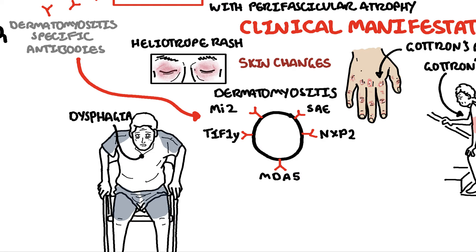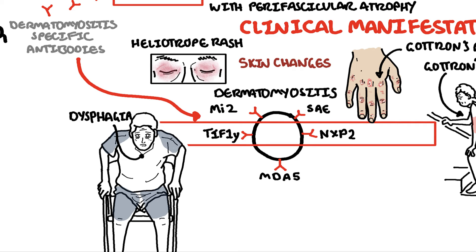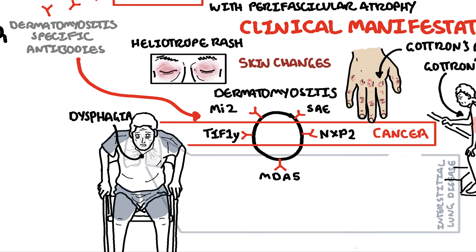Anti-MI2 is the most frequently seen in adults. Anti-TIF1-gamma and anti-NXP2 are associated with malignancy — TIF1-gamma specifically is strongly associated with malignancy. MDA5 is associated with interstitial lung disease.